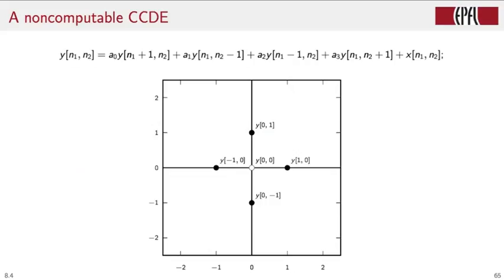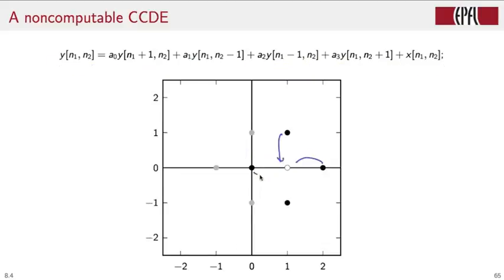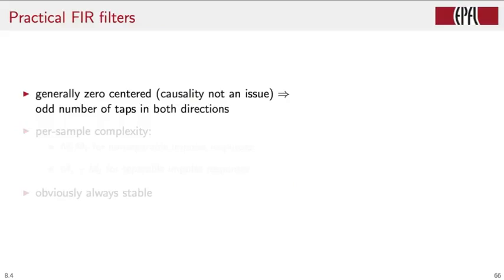Here is a simple example. Consider a filter where each output sample is computed as the linear combination of four previous output samples — this is what makes the filter IIR — plus the input. In order to compute the output at (0,0), we need contributions from four samples. But to compute one of those required samples, we need four other previous output samples, one of which is the sample at (0,0) itself — the very thing we were trying to compute. This creates an unbreakable self-referential loop that makes this filter non-computable. So IIR filters are pretty much out for us. Let's look at some practical FIR filters.